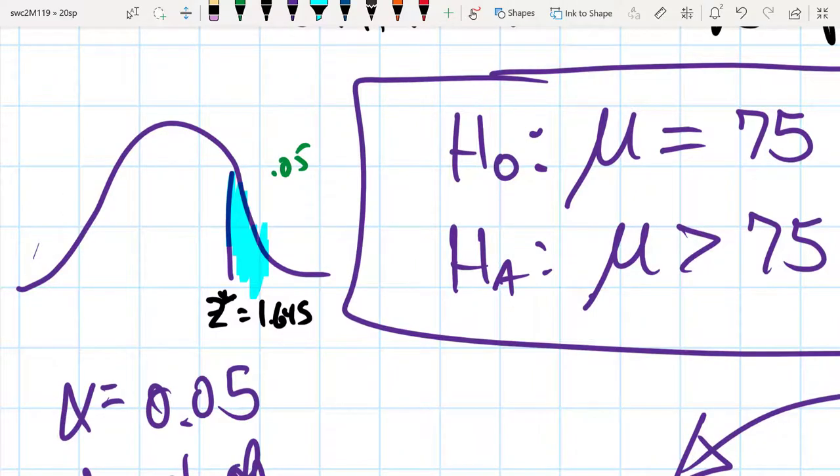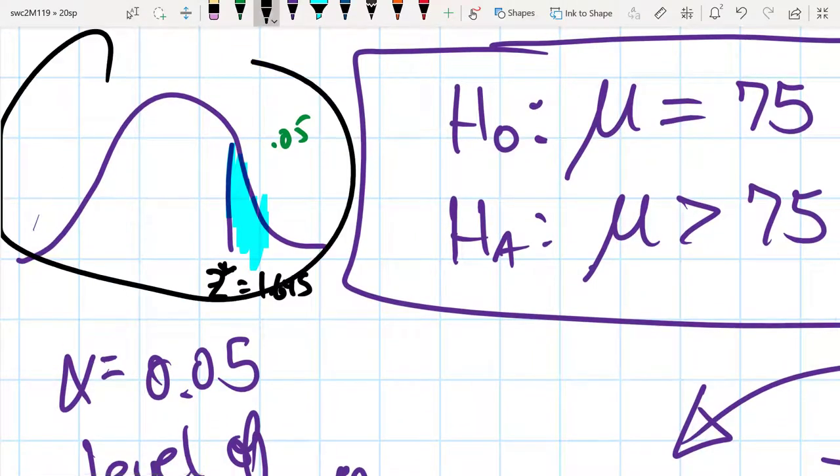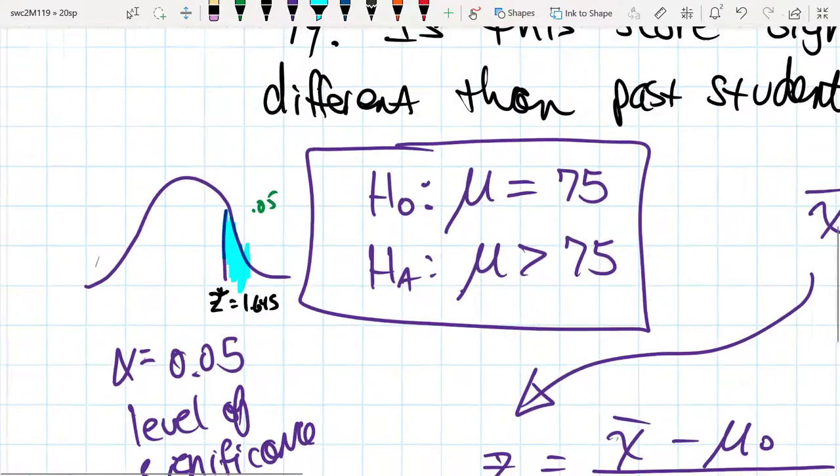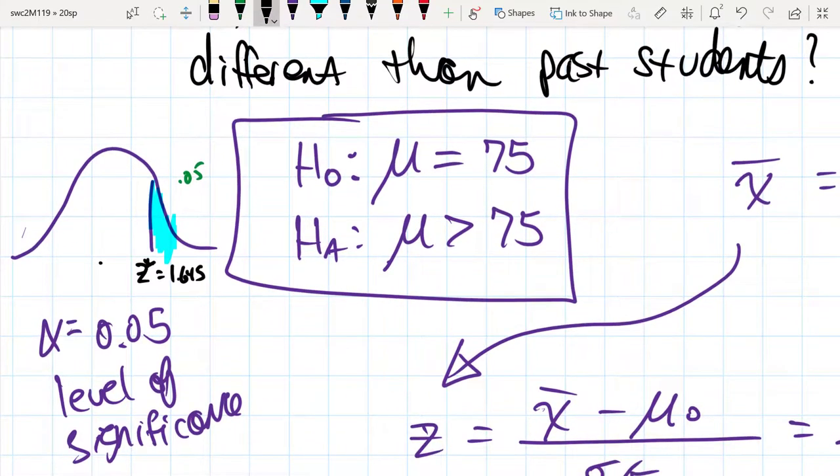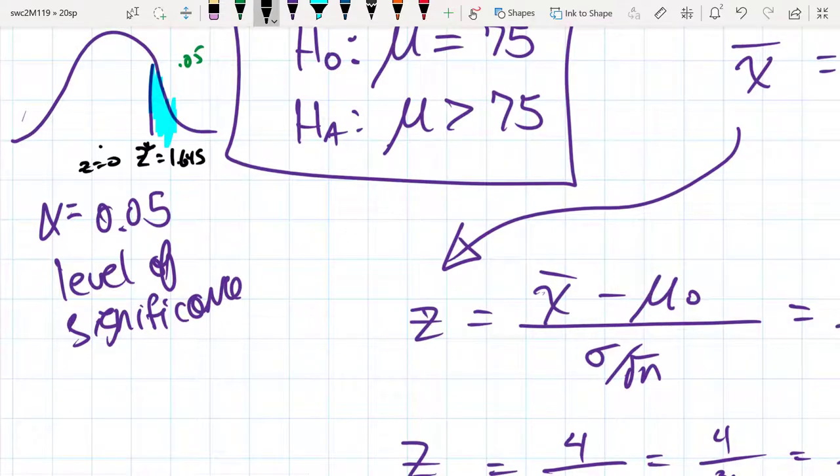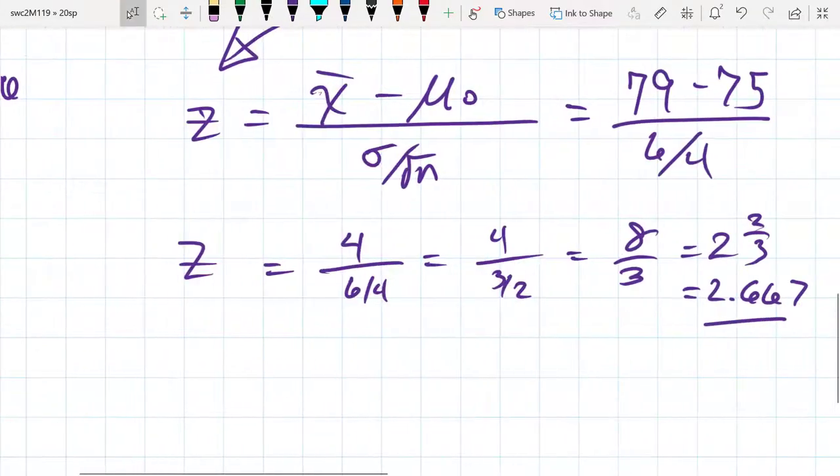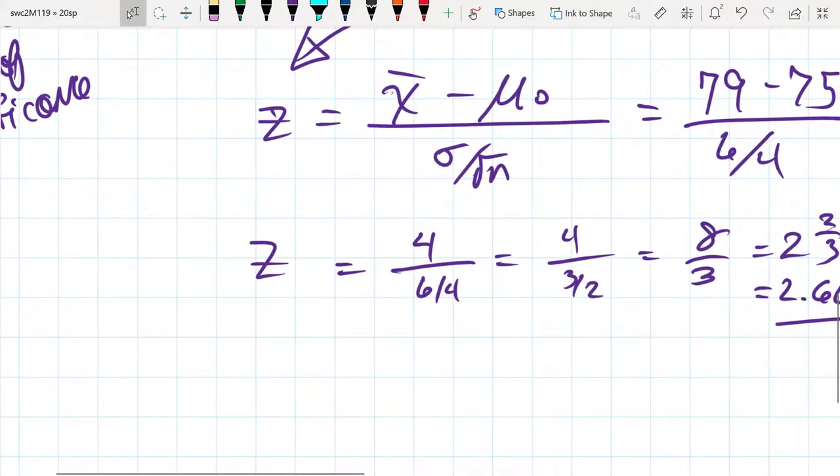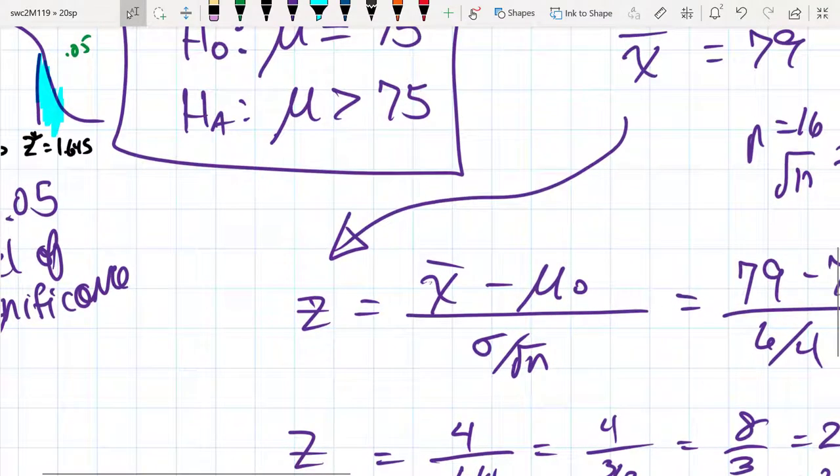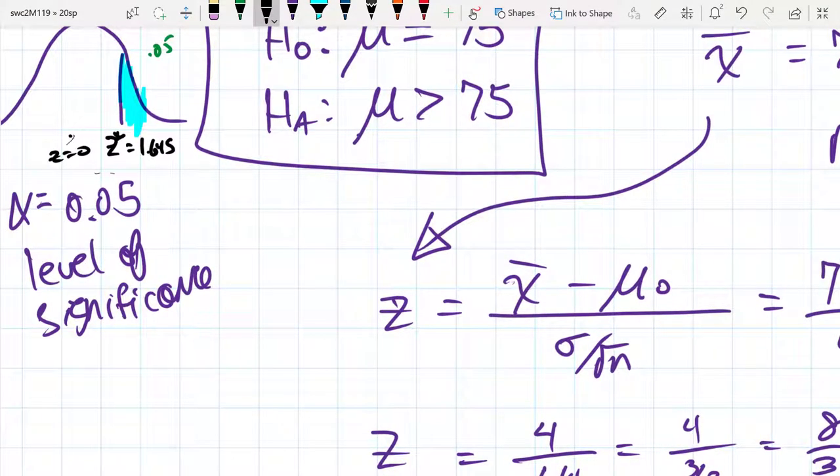Let's go ahead and use our 0.05. This is what we're going to compare everything to. When we figure out what our test statistic is, we see that it is 2.667. That 2.667 is into the rejection region.